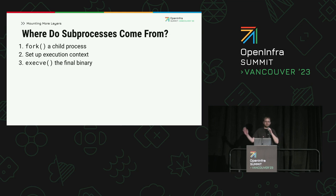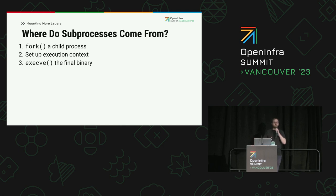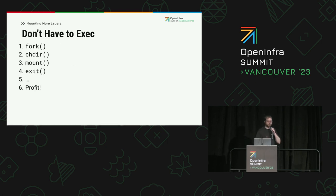Let's dig a bit deeper into how processes are started. Launching a new program as a subprocess is a multi-step procedure. First, you call fork, which duplicates the calling thread in a copy of its memory space. Forking is fairly cheap on Linux because memory is copy-on-write. Next, the child process sets up the execution context, such as changing the current working directory. And finally, the child calls execve to replace itself with the new program.